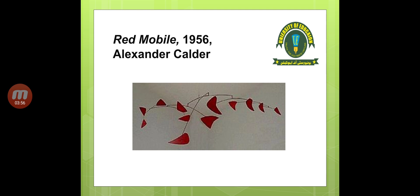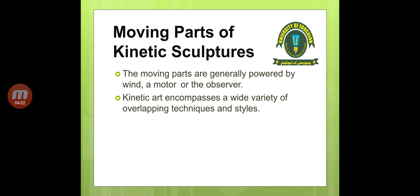The moving parts of kinetic sculptures are generally powered by wind, a motor, or the observer. If there is wind, it will move. Otherwise, a motor is used when the piece is displayed. The observer can also initiate movement. Kinetic art encompasses a wide variety of overlapping techniques and styles.